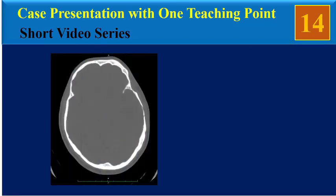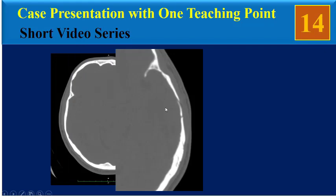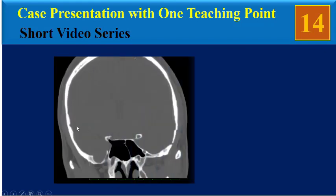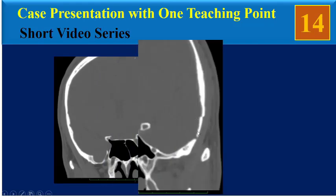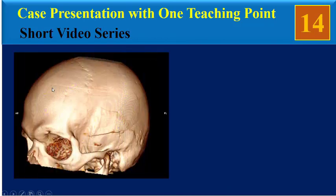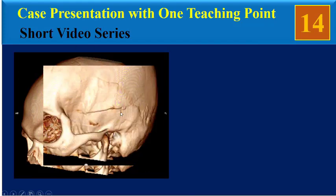In this axial bone view there is a depression fracture in the squamous part of left temporal bone. Another view of depressed fracture in coronal view and also in sagittal view. And this is 3D volume rendering reformatted images from the skull, and we can see obvious depressed fracture in squamous part of left temporal bone.